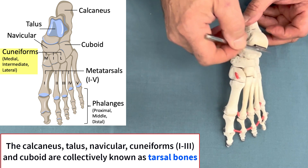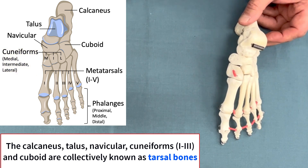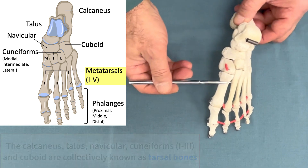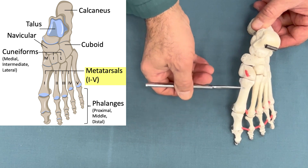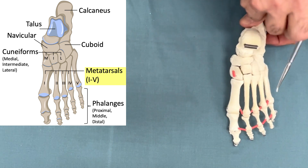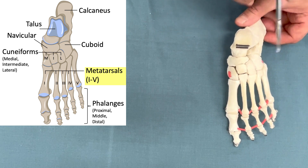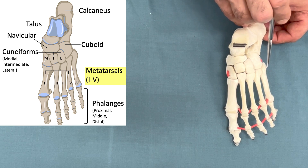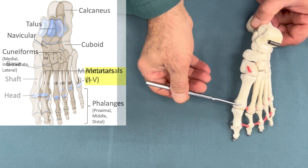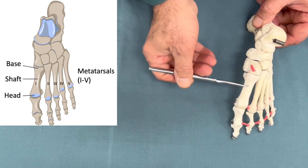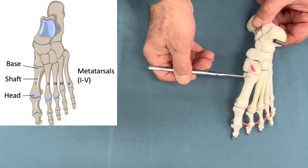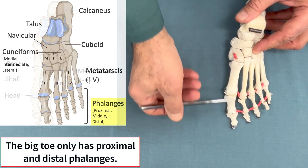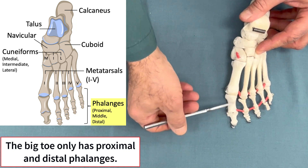The cuneiforms are numbered one, two, three — or medial, intermediate, and lateral — from the big toe side. All seven bones together are referred to as tarsal bones. Then we have metatarsal bones numbered one to five from medial to lateral. On the fifth metatarsal we have this tuberosity, which is a nice bony landmark.